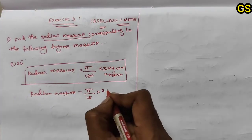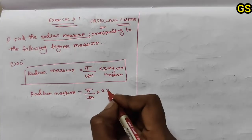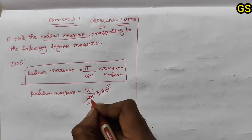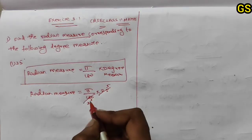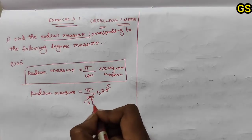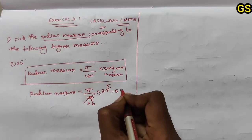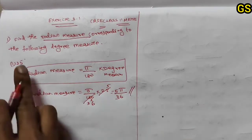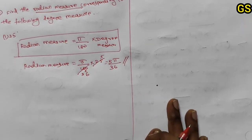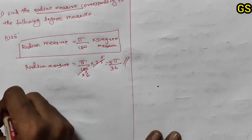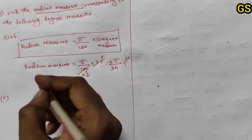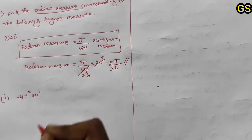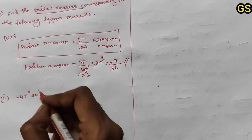Into degree value 25. Using the 5 table: 3 fives are 15, balance 3. 30 is 6 times. So the answer is 5 pi by 36. This is the degree to radian format for the first problem.